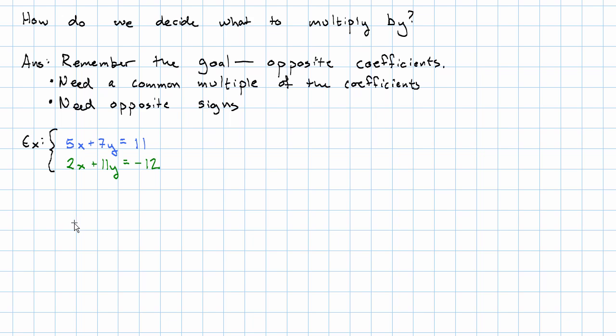Say we have this system. 5x plus 7y is 11. 2x plus 11y is negative 12. There's nothing obvious to multiply by. In the last example we had to multiply by 2 because 2 times 3 was 6. Here, we can't take 2 times anything to get 5. We can't take 5 times anything to get 2, 7, 11, nothing in common.